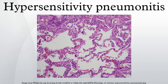Pathophysiology: Hypersensitivity pneumonitis involves inhalation of an antigen, which leads to an exaggerated immune response. Both type 3 hypersensitivity and type 4 hypersensitivity occur in hypersensitivity pneumonitis.